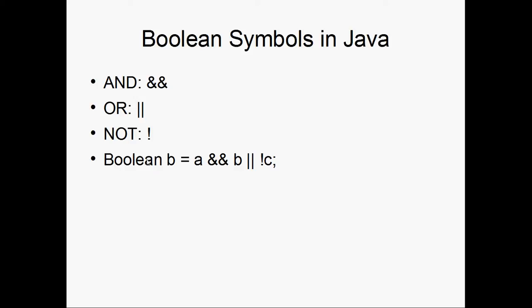And this is how you define a Boolean variable in Java. Typically you're not doing this though, but for the case of just basic education, this is good to know. Boolean b equals a && b || !c.